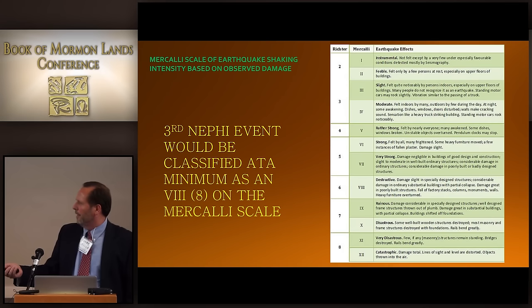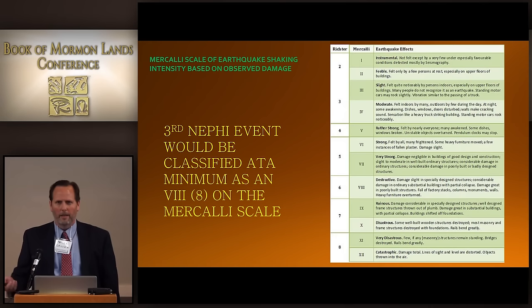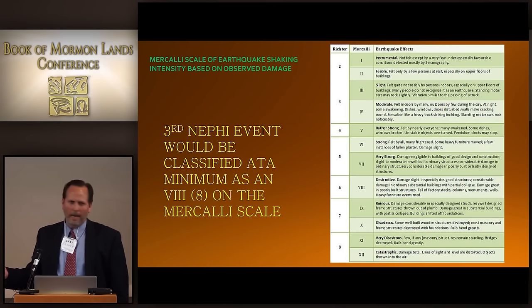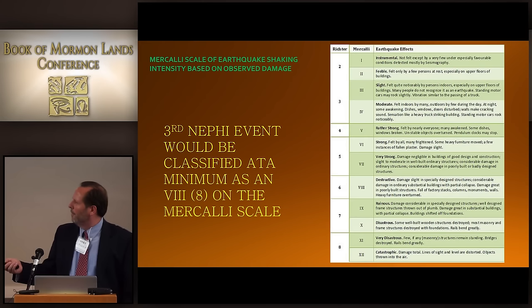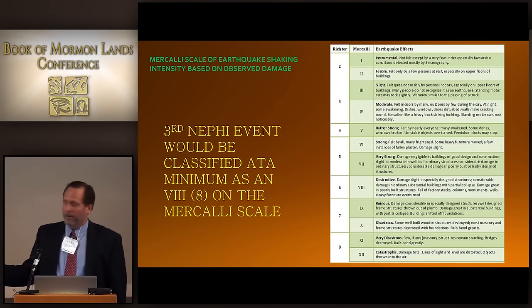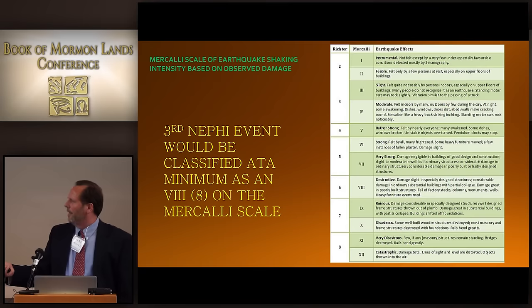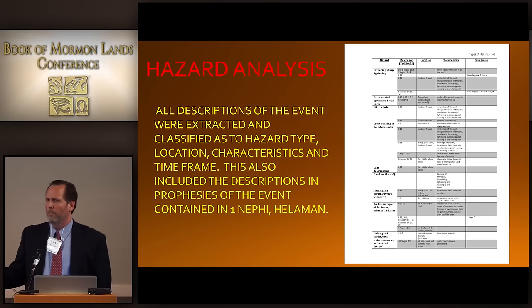With an ancient event, there was no seismograph available, so I have to use descriptions of damage to back-calculate earthquake power. There's the Mercalli scale, which compares to the Richter scale — they've said that if an earthquake is a certain size, it corresponds to levels I through XII on the modified Mercalli scale, with XII being the most powerful. I also took the entire Third Nephi event and extracted and classified the hazard type, location, characteristics, and timeframe. The timeframe has importance for determining what type of event occurred. I also did the prophecies, treating them as actual reports — assuming the prophets saw something real, even if not in exact chronological order.